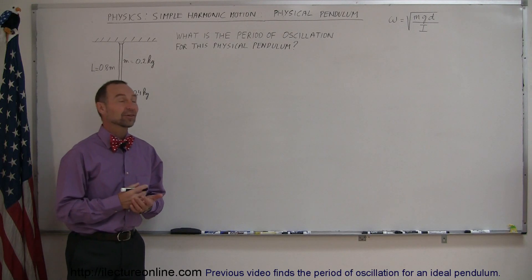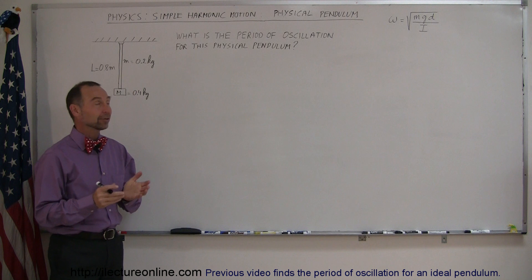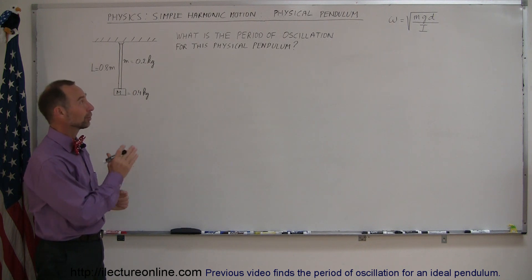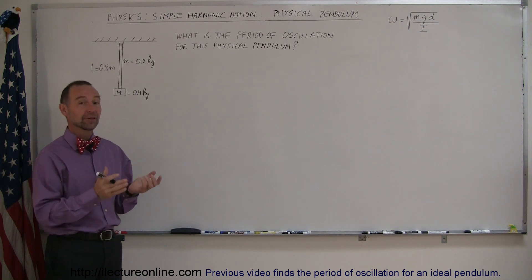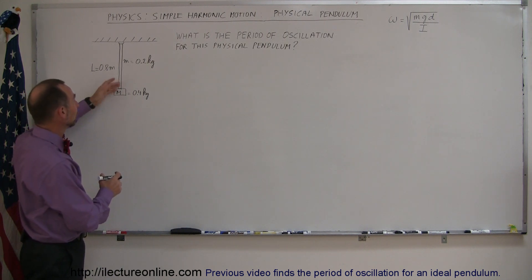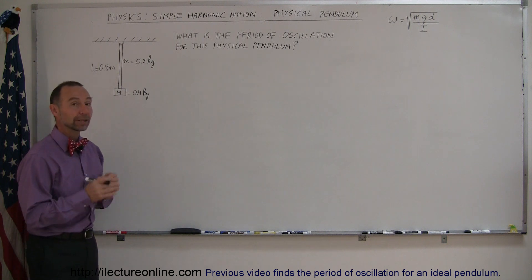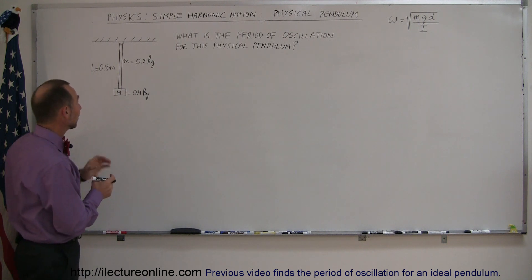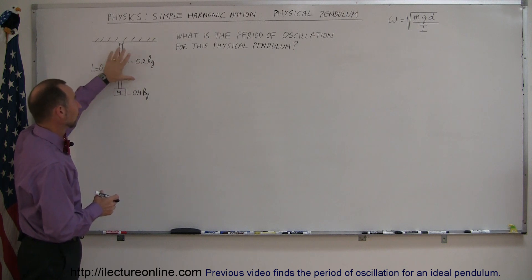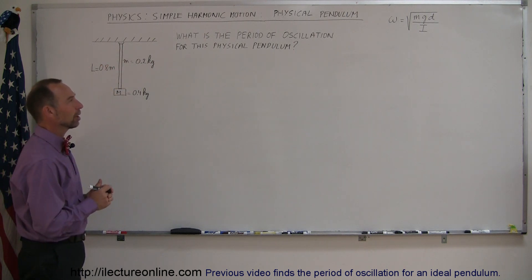Welcome to iLectra Online. Here's another example of how we deal with simple harmonic motion. We're going to talk about a pendulum, but not the ideal pendulum — we're going to talk about the physical pendulum. The difference is, with an ideal pendulum, all the mass is at the very end. There's no mass associated with the string or bar. In this case, we do have a bar that has mass, so this is a physical pendulum.